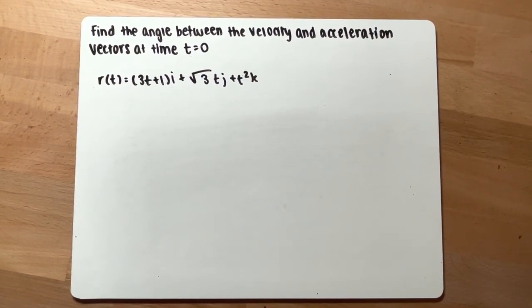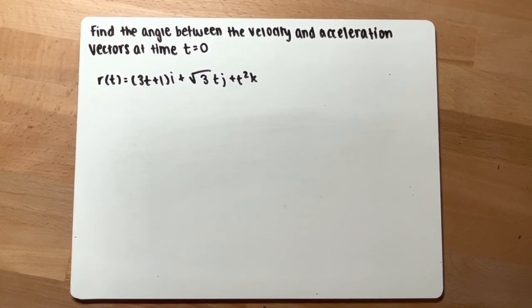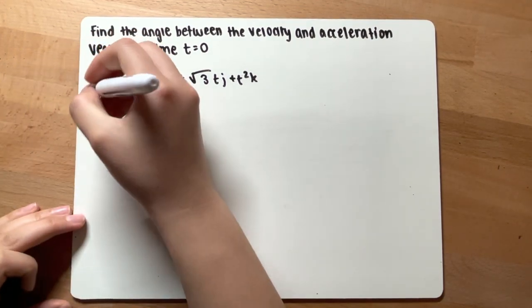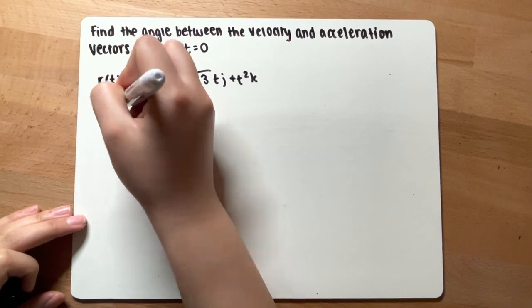This problem asks you to find the angle between the velocity and acceleration vectors at time t equals 0. You have a function right here. To find the velocity vector, you just find the derivative of the original function.